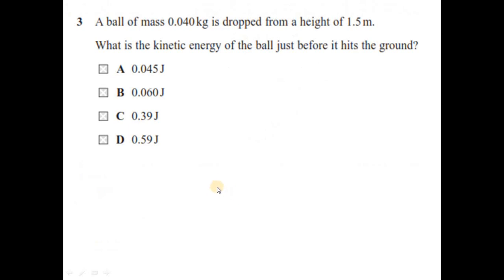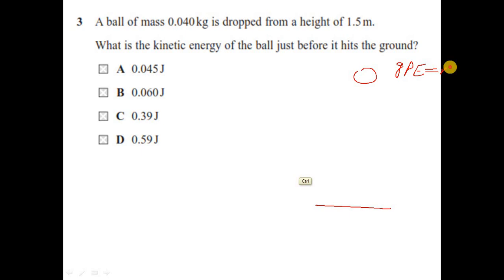Question three: a ball of mass 0.04 kg is dropped from a height of 1.5 metres — what is the kinetic energy? When the ball is dropped from height, it has only gravitational potential energy (GPE), which equals mgh. As the ball falls, GPE decreases and kinetic energy increases.